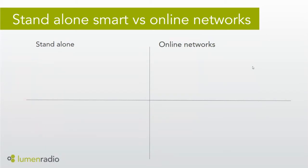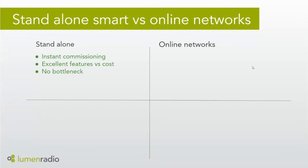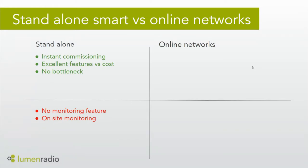So what's the difference between a standalone smart system and an online network? On a standalone system where luminaires talk to each other, you have instant commissioning, excellent features versus cost — all the smart abilities with programming, motion sensors, and manual control — but without the high cost of a gateway. There's no bottleneck, meaning if one luminaire is not functioning or there's maintenance nearby, the network keeps working. The disadvantage of a standalone network is there's no remote monitoring — only on-site monitoring, which can actually be a benefit if you are constantly on-site.